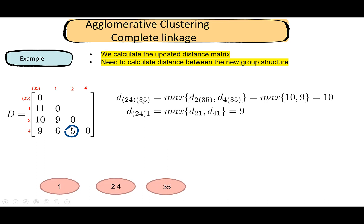So the distance between groups {two, four} and {three, five} is 10. Now I need the distance between group {two, four} and group {one}. That is the maximum of d(2,1) and d(4,1): two and one is 9, four and one is 6, so the maximum is 9. The distance between {three, five} and one is already known as 11, so we don't need to recalculate it.